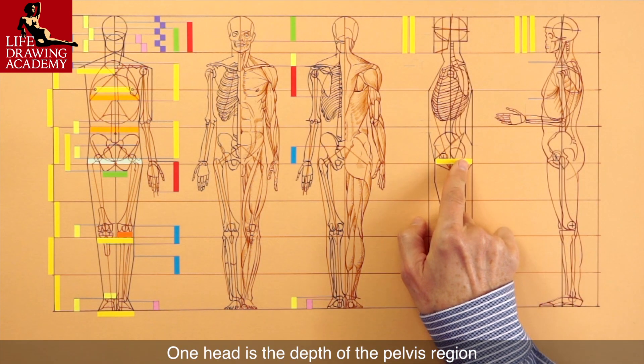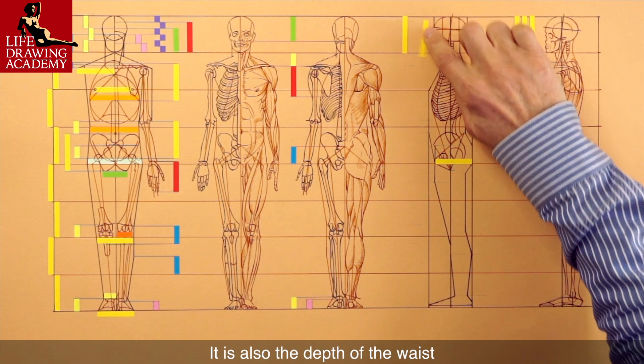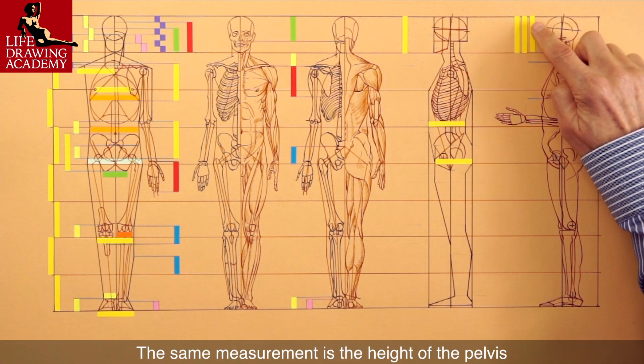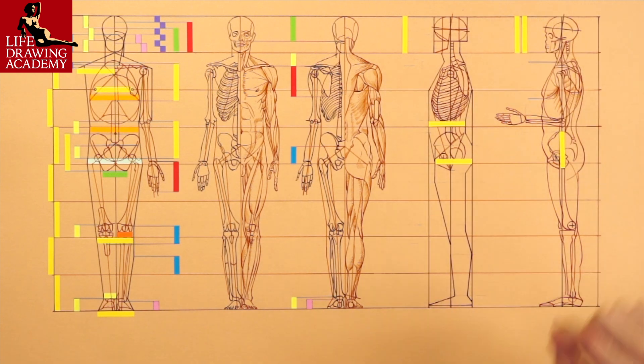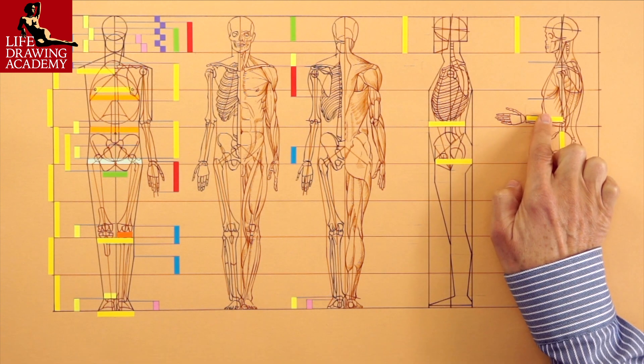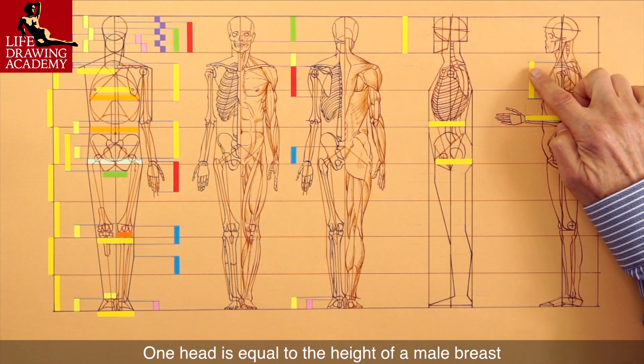One head is the depth of the pelvis region. It is also the depth of the waist. The same measurement is the height of the pelvis. And it is also the length of the radius bone. One head is equal to the height of a male breast.